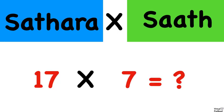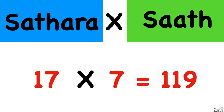So we have 17 satra times 7 sat. Now let's do the math problem. If you said 119, excellent work. 119 is satra times sat, 17 times 7. Before I show you how to say it in Hindi, can you figure out how we say 119 in Hindi? First, figure out how to say 19 in Hindi.